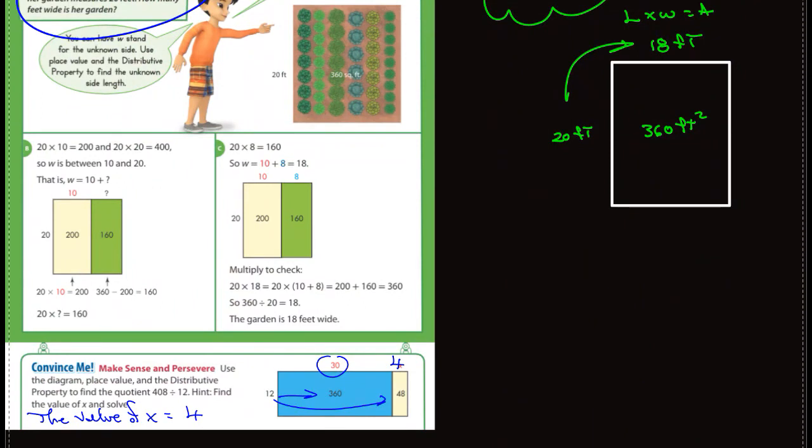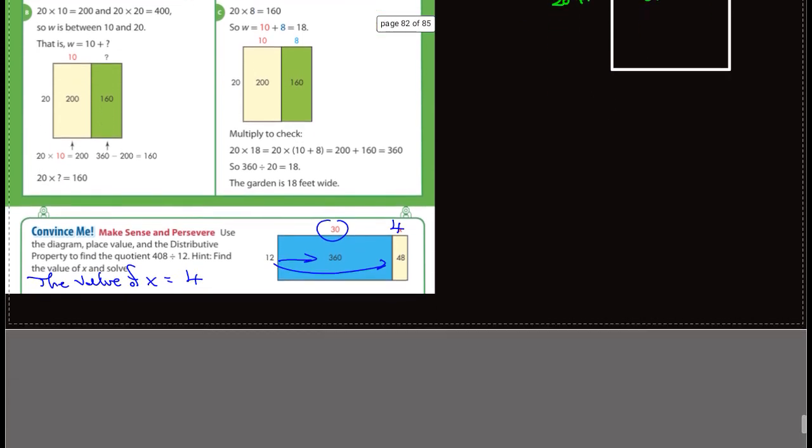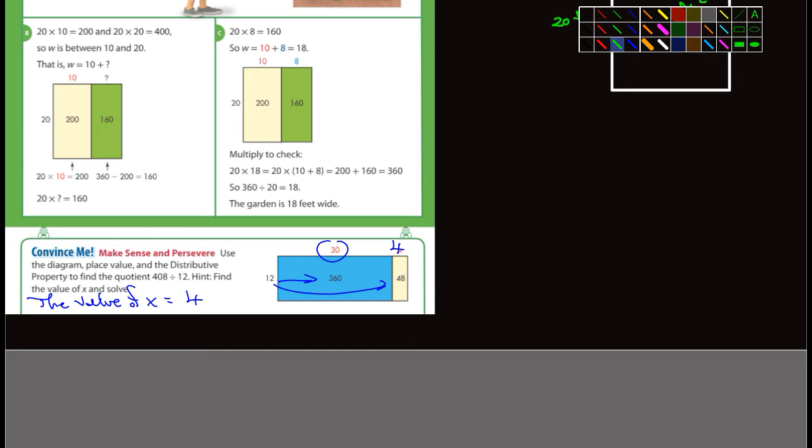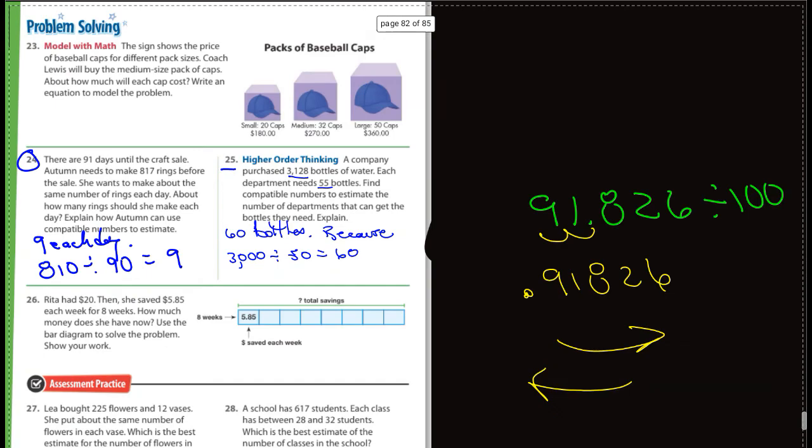I'm not going to go over that. Sometimes I think these are just kind of confusing. It doesn't help any. So look at the convince me here. I'm going to use my highlights here since I already did this already. So you're looking for the value of X. What times 12 equals 360? Well, that'd be 30. And then what times 12 equals 48? Well, that would be 4, and that's the number they're looking for. So I wrote down the value of X equals 4. So let's go to the next page, the guided practice.